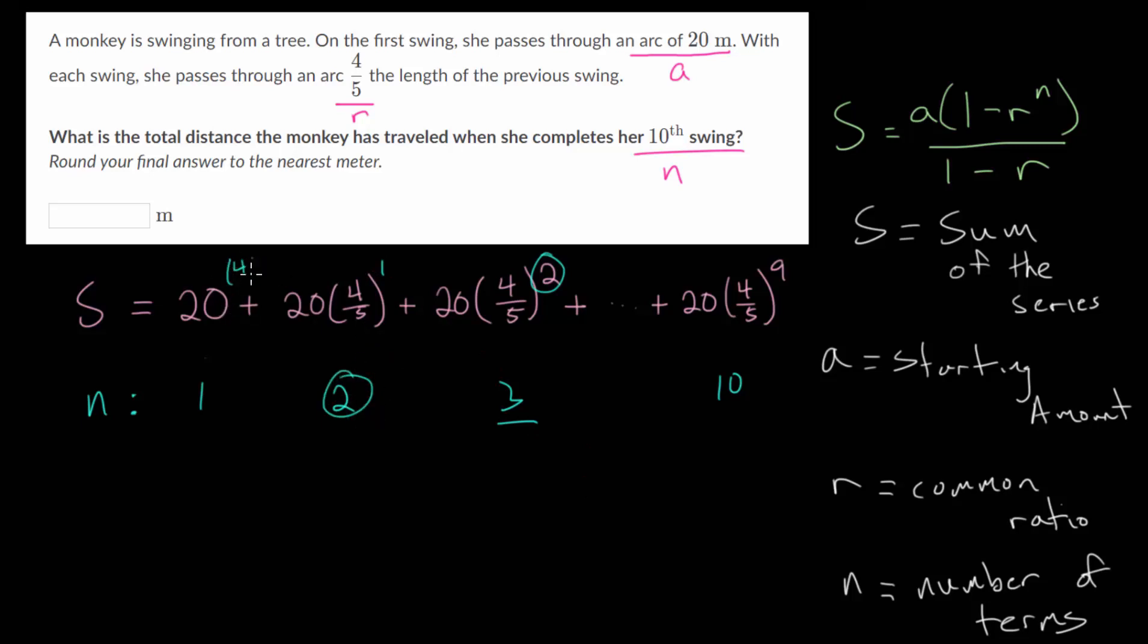And you could think this is really 20 times 4 fifths to the 0 power if you want, since anything to the 0 power is 1. But regardless, the exponent is always 1 less than the term value. So that's why this is a 9 rather than a 10.